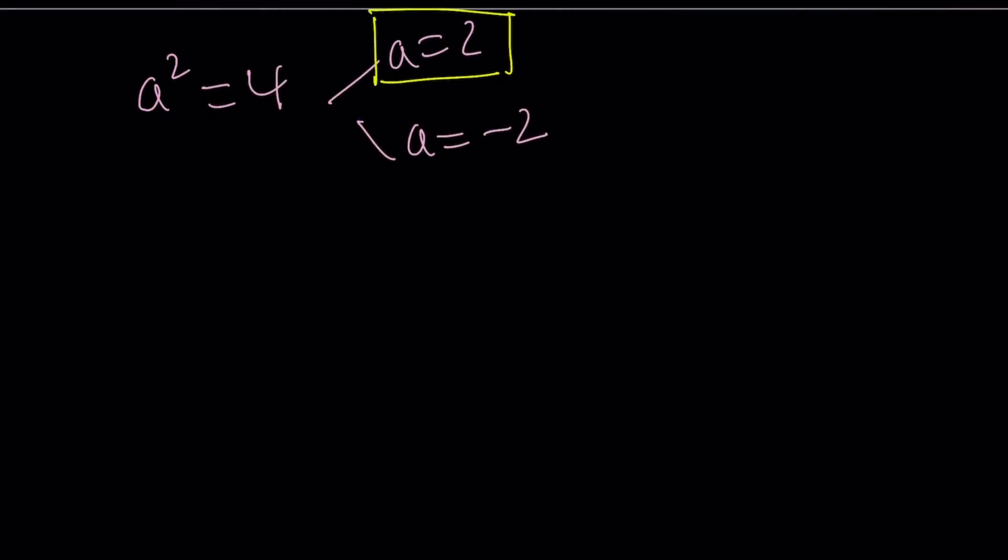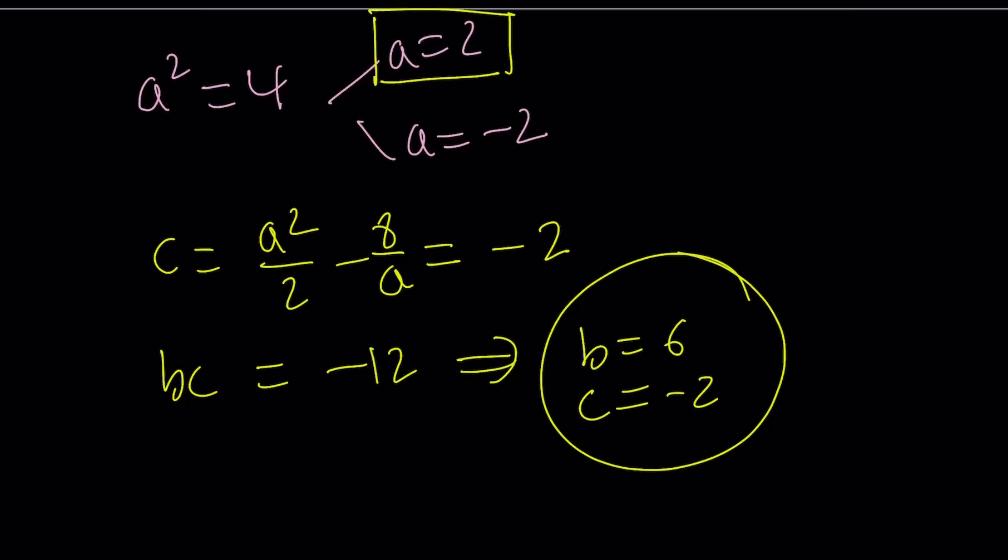If a is equal to 2, we know the value of b and c based on a. So c can be written as a squared over 2 minus 8 over a, and this is just going to be 4 over 2, which is 2, minus 8 over 2, which is 4. 2 minus 4 is equal to negative 2. So we get c equals negative 2. And since we know that bc is negative 12, we get b equals 6.